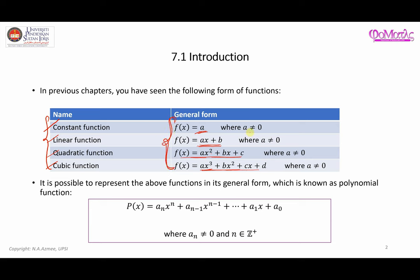Now, this type of function — this mathematical representation of the functions given here — can actually be represented in a general form, which is known as the polynomial function. It is written such that you have the coefficients multiplied next to x, and these are the powers of x. Notice that the value of a_n is not equal to zero, and n here consists of positive integers only.